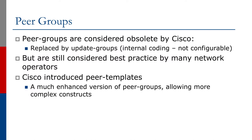Peer groups are generally considered obsolete by many because they have been replaced by update groups, which is an internal coding improvement. However, peer groups are still considered best practice by many network operators. Indeed, Cisco has introduced a concept called peer templates, which is a much enhanced version of peer groups allowing much more complex constructs. But peer groups are still widely used by many network operators.